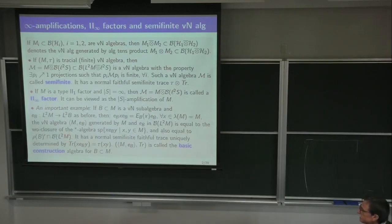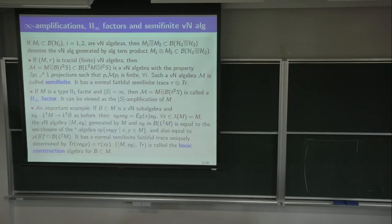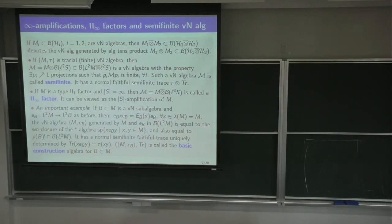This von Neumann algebra has a normal semi-finite faithful trace uniquely determined by a specific formula. So it is a semi-finite von Neumann algebra — an important example of one. And this is what one calls the basic construction for B into M: this new, bigger algebra with its trace.